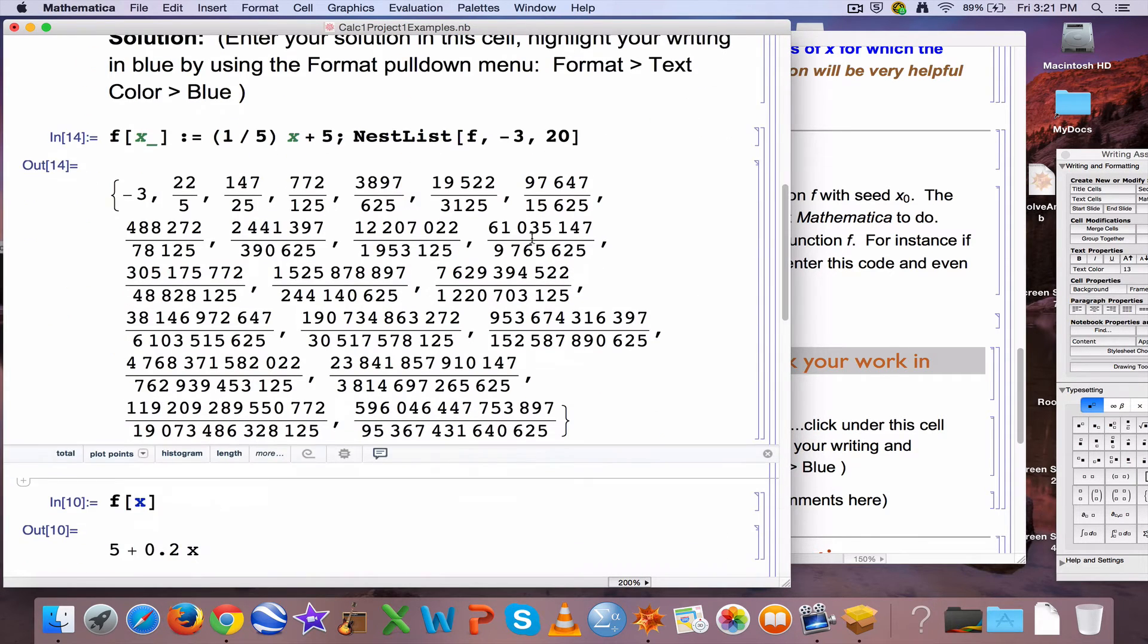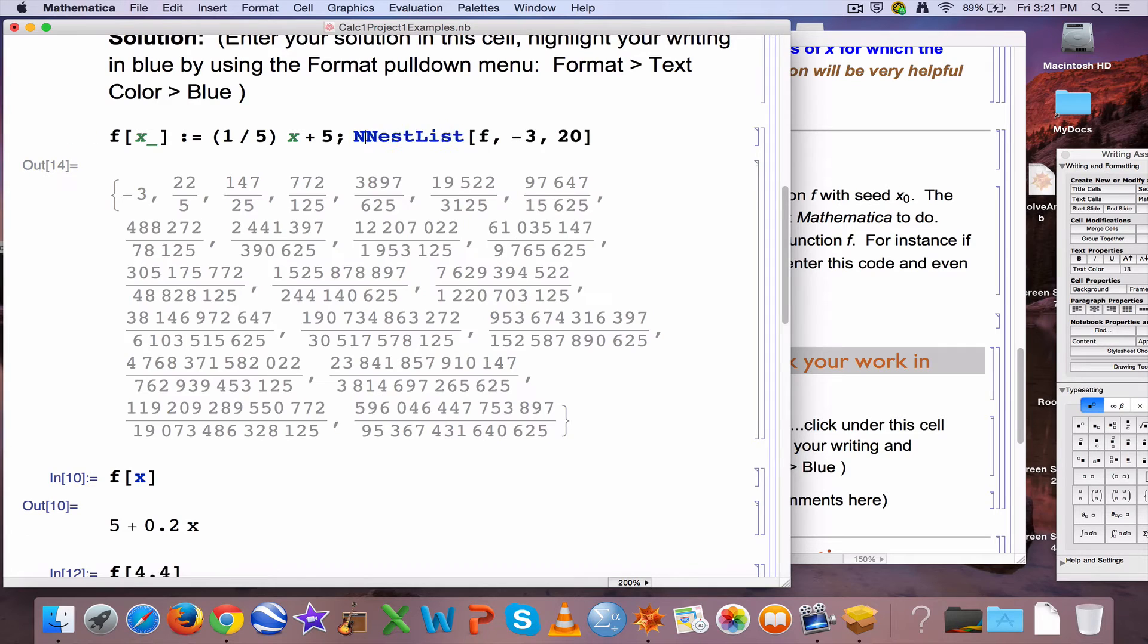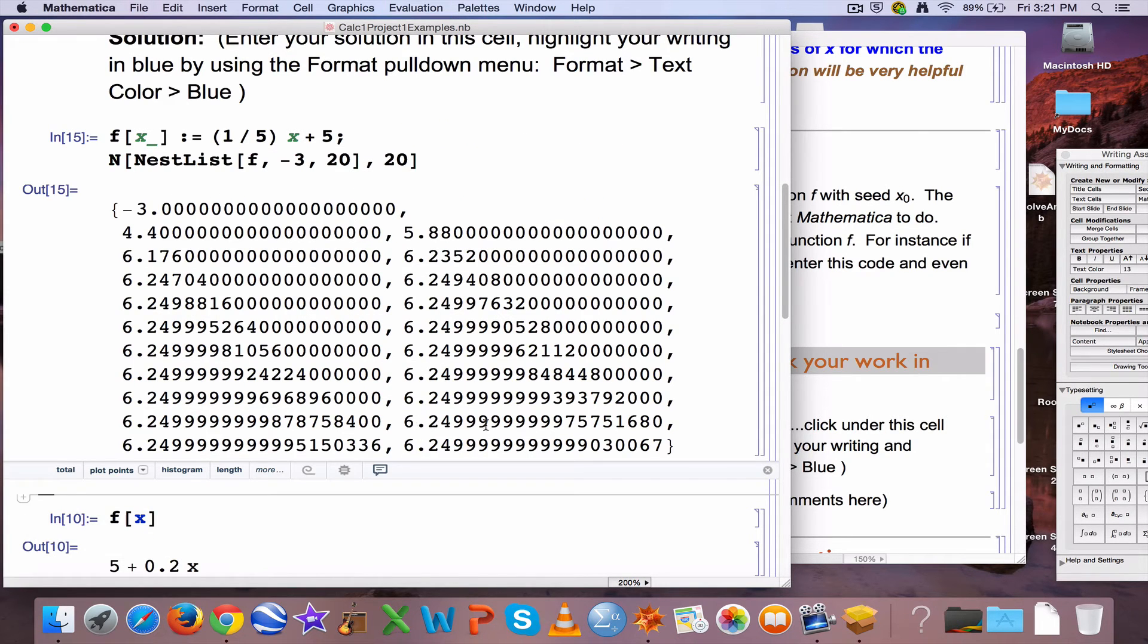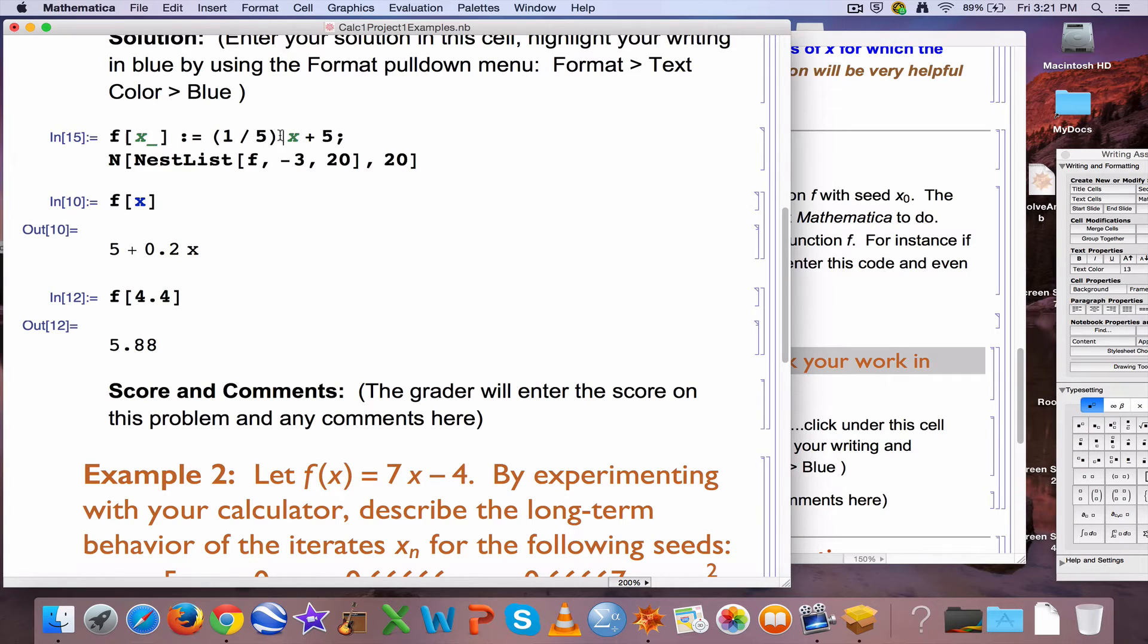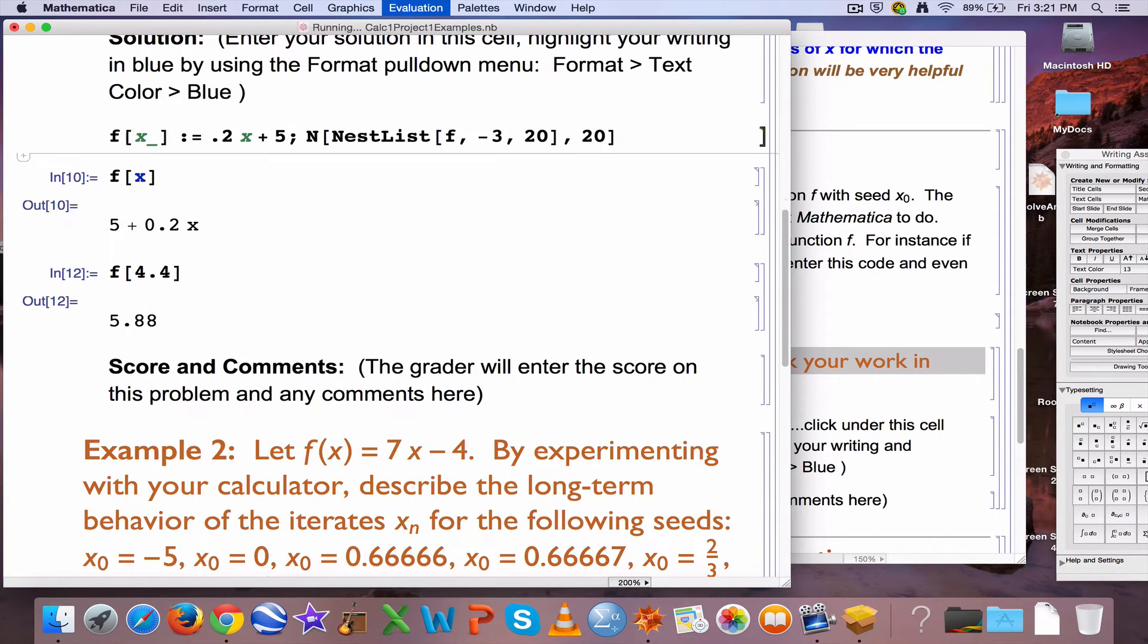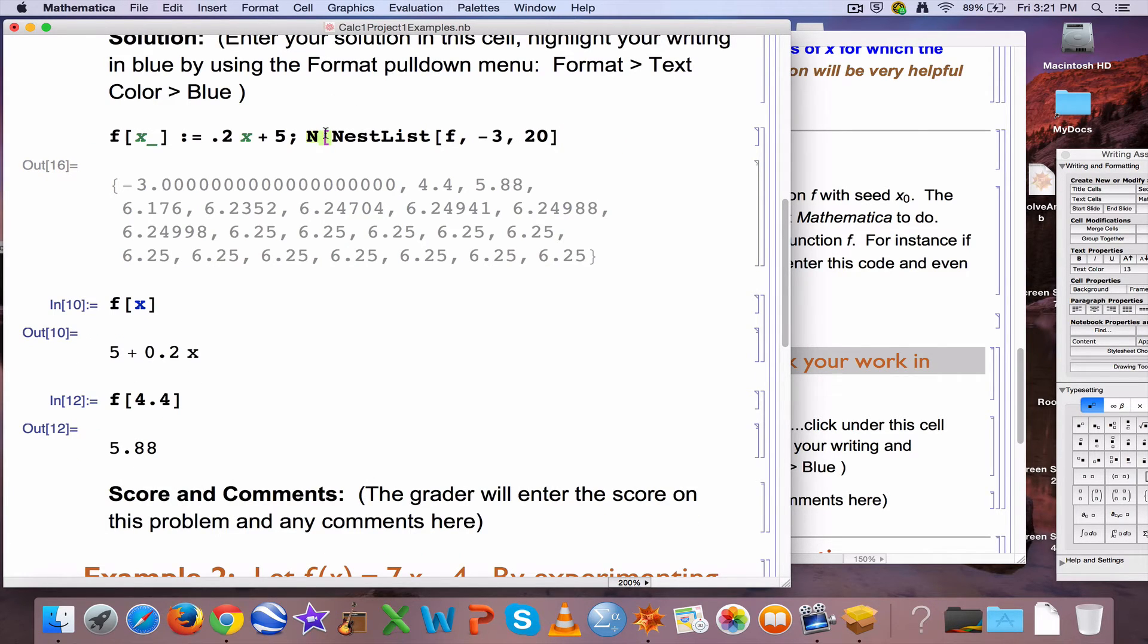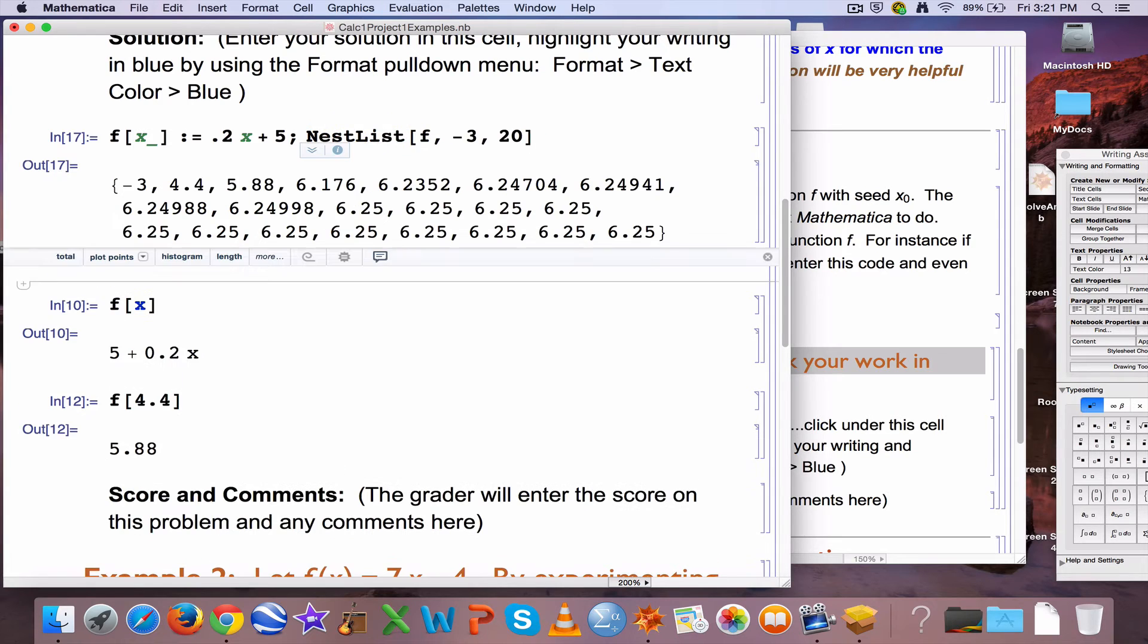If I use the capital N function and put, say, a 20 here, they never actually equal 6.25 exactly. Okay? It's not something to really worry about too much. Let's go back to the way we originally had it. Now when you have it in there as a decimal, it's rounding and not rounding to 20 places. That's the way Mathematica works.